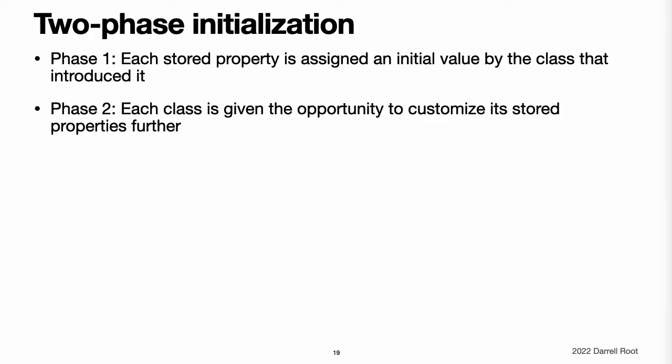Two-phase initialization. Class initialization in Swift is a two-phase process. In the first phase, each stored property is assigned an initial value by the class that introduced it. Once the initial state for each stored property has been determined, the second phase begins, and each class is given the opportunity to customize its stored properties further before the new instance is considered ready for use.